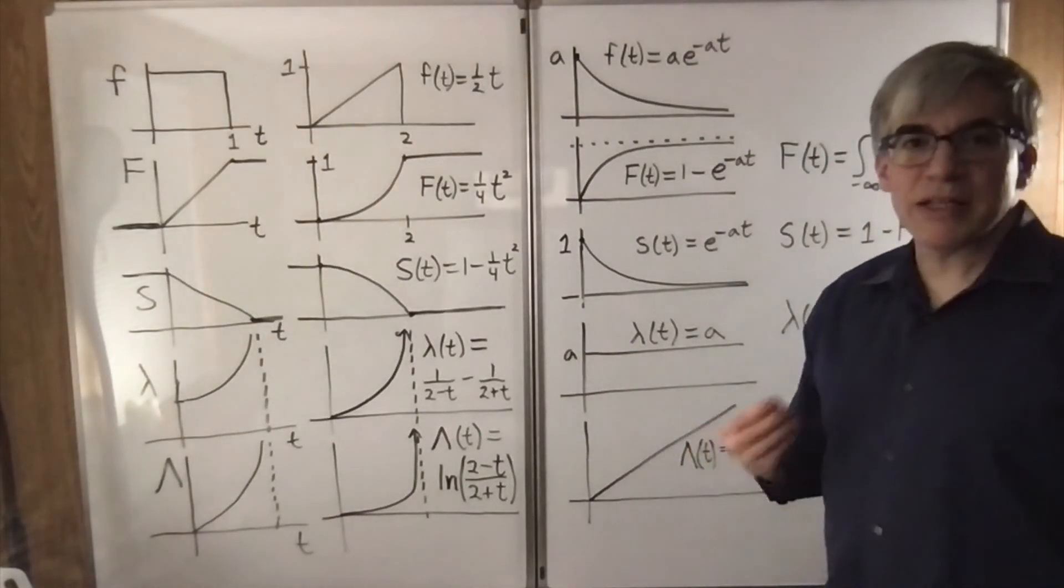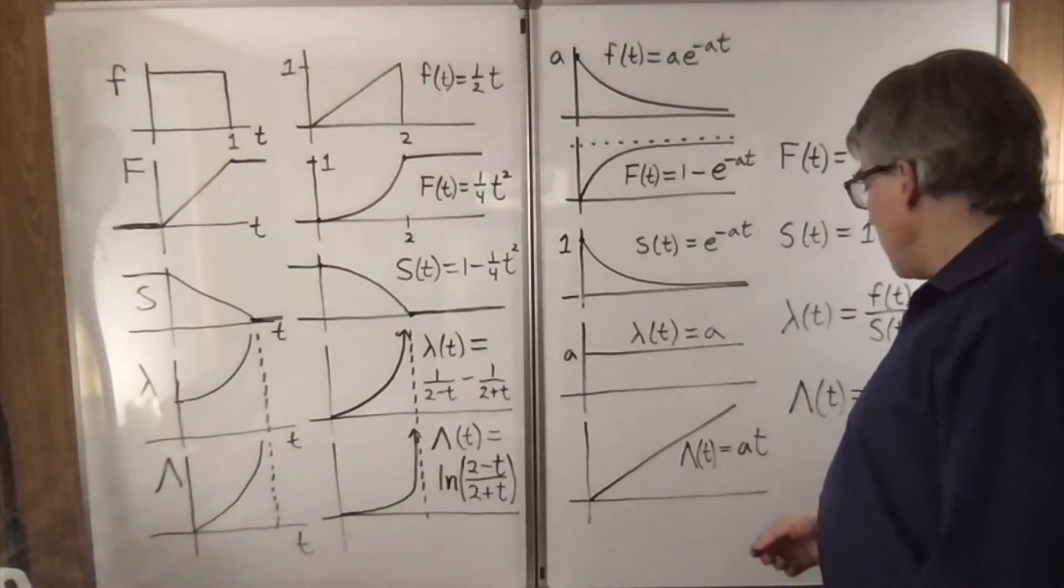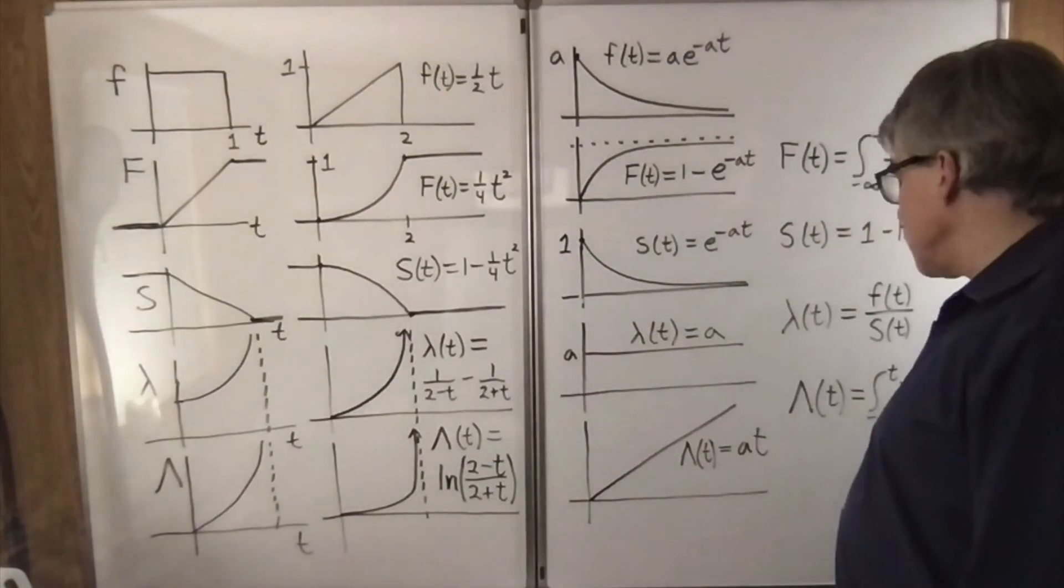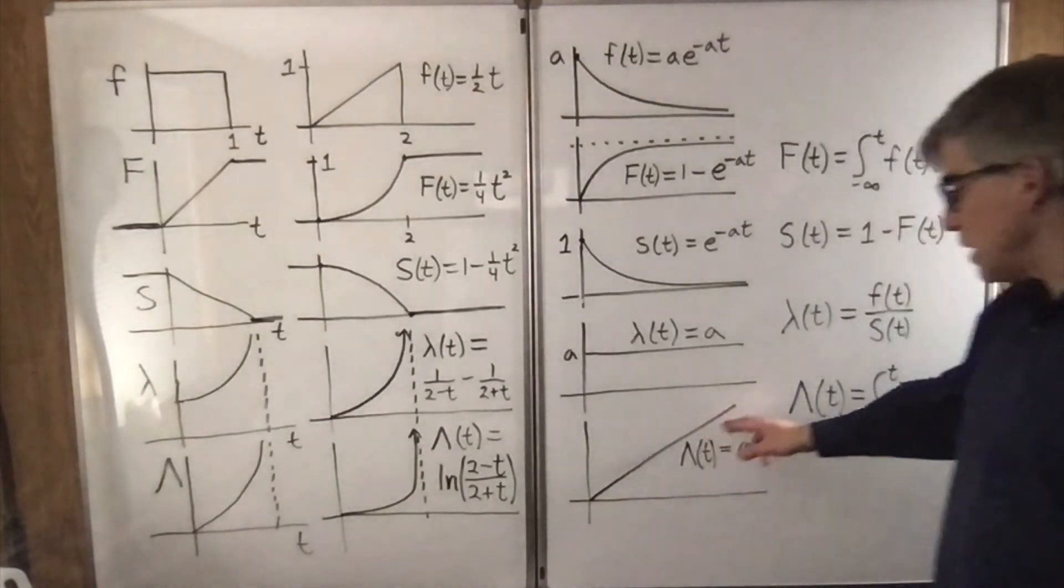It's tied to the fact that it's what we call memoryless. And as a result, the cumulative hazard function is just an increasing line, a T.